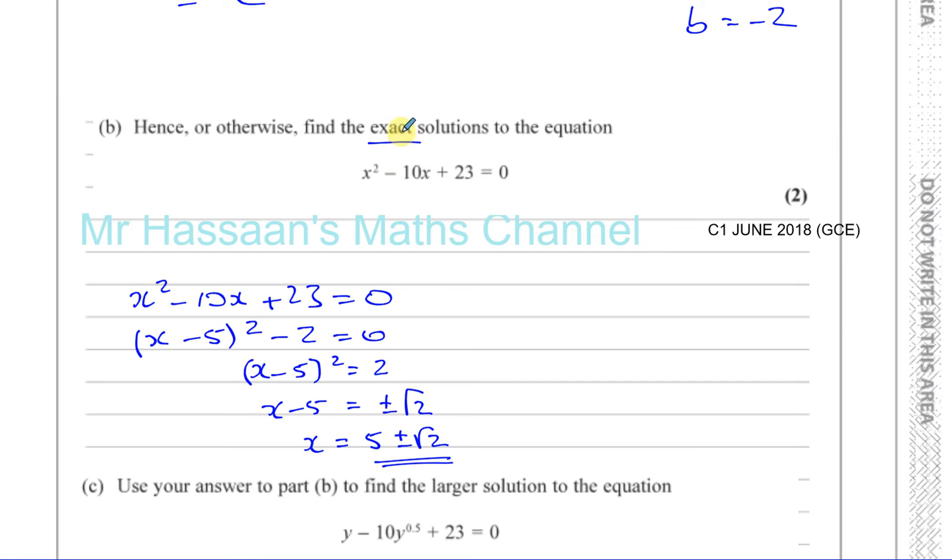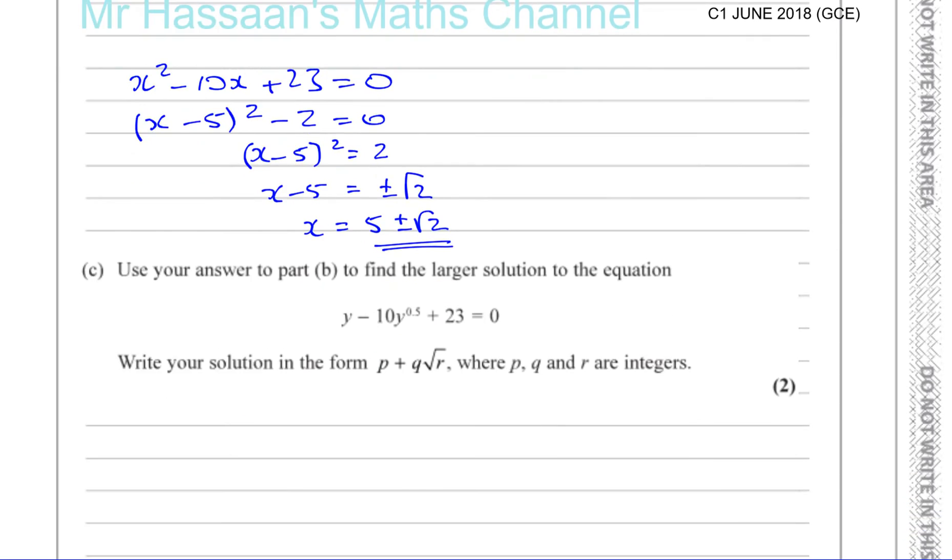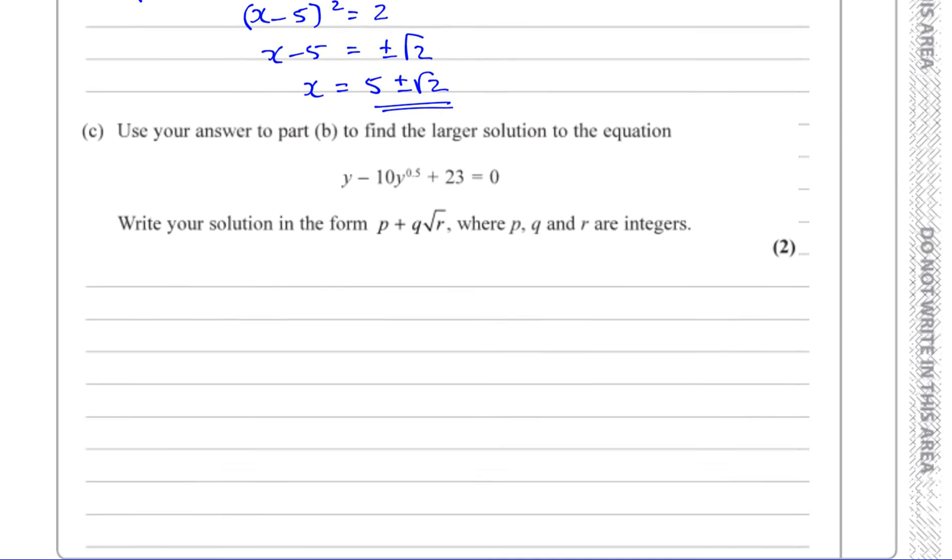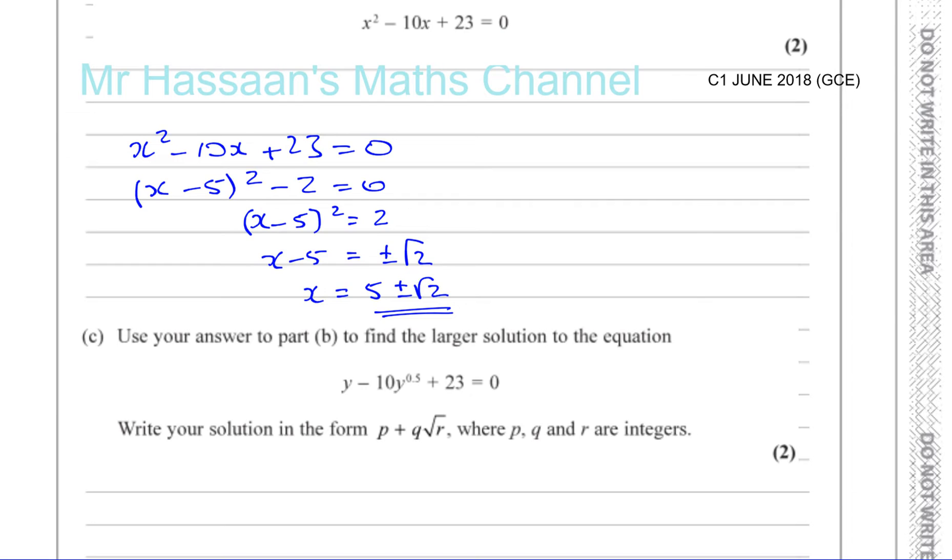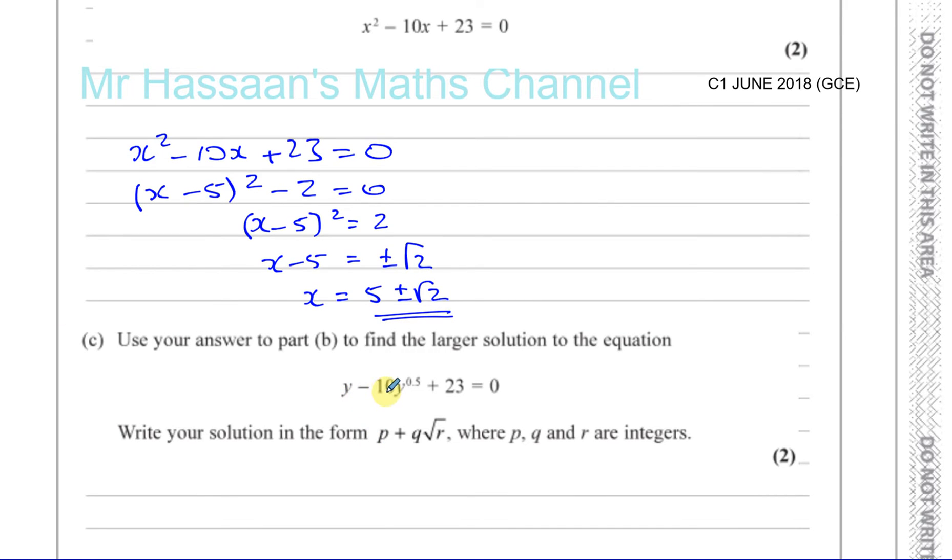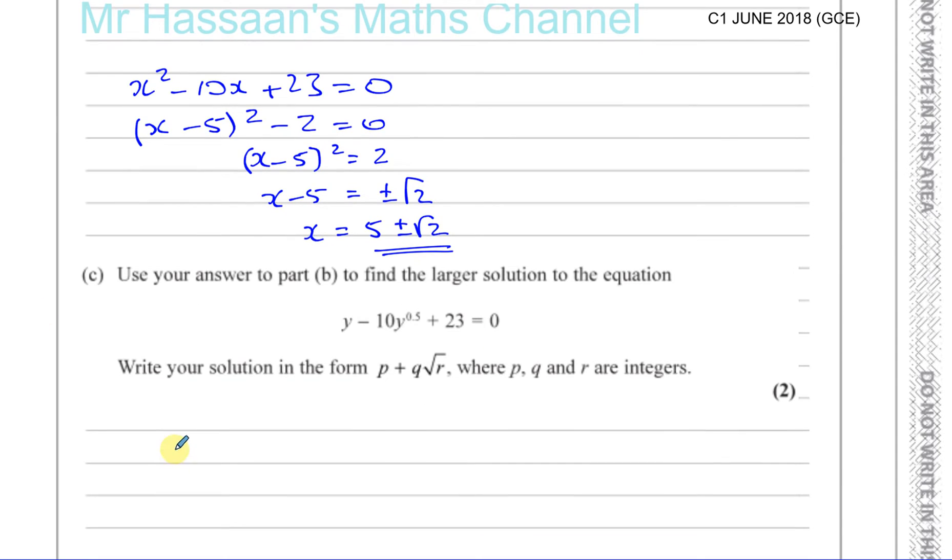Otherwise, we could have used the quadratic formula to solve this equation. We can't factorize it because there's a little clue when it says exact. It means there's going to be some surds in there. So that's part B done. And part C says use your answer to part B to find the larger solution to the equation y minus 10y to the power of 0.5 plus 23 equals 0.